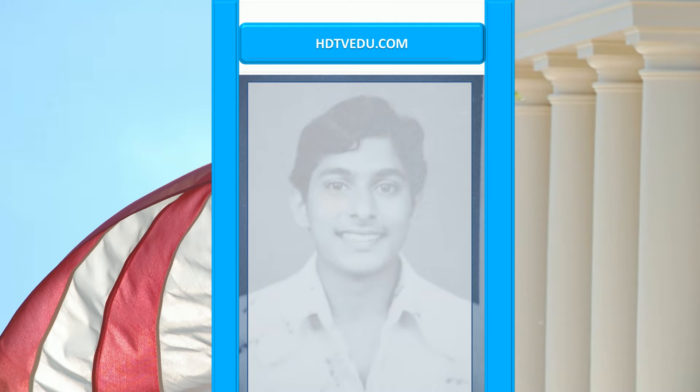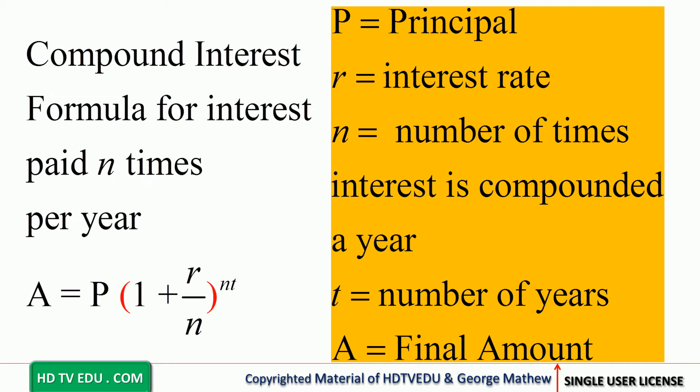The compound interest formula for interest paid n times per year is: A = P times (1 + r/n) to the power of nt. P is the principal. R is the interest rate — make sure you put it into decimal form. N is the number of times interest is compounded per year; if it is quarterly, n equals four; every six months, n equals two.